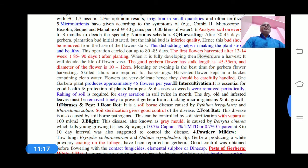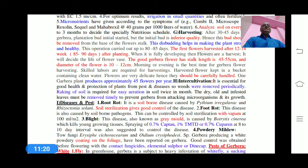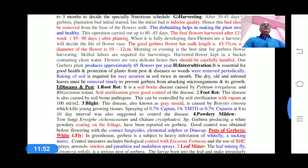The first flowers are harvested after 12 to 14 weeks after plantation when fully developed. Good gerbera flowers have stock length about 45 to 55 centimeters and diameter of the flower should be 10 to 12 centimeters. This is good quality for marketing.